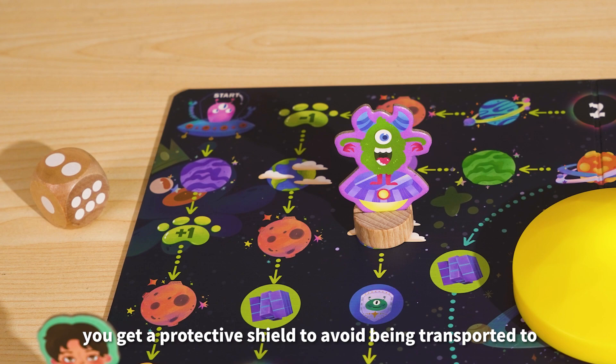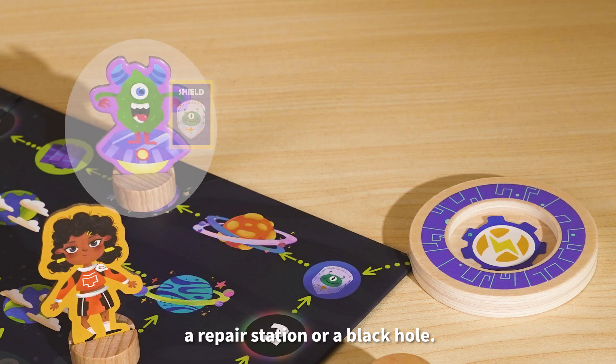Alien Shield. You get a protective shield to avoid being transported to a repair station or a black hole.